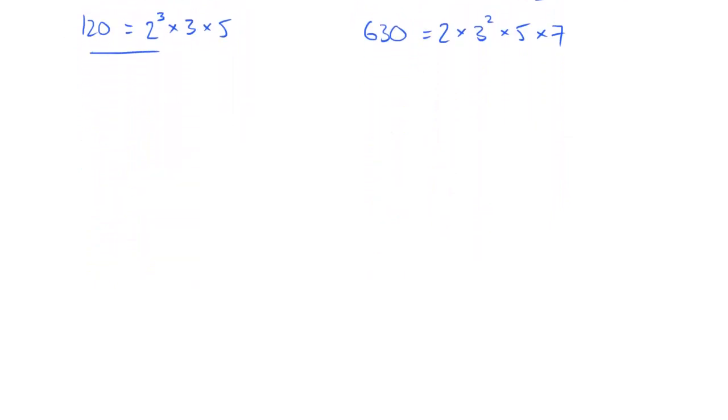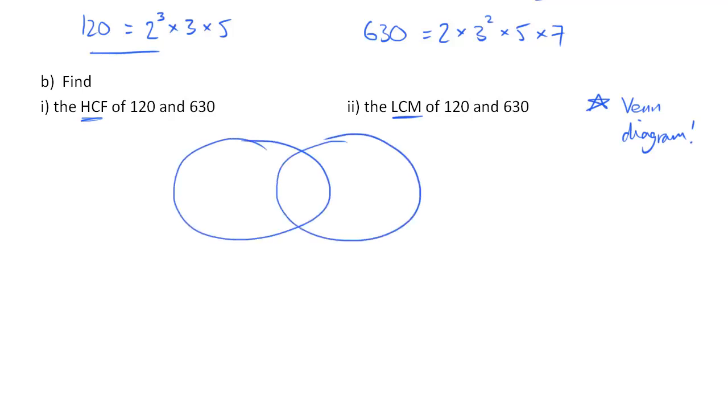Now one way in which this kind of prime factor decomposition is useful is working out things like this. So the highest common factor and the lowest common multiple, given that we've got the prime factor decomposition, the easiest way is to use a Venn diagram. One on the left represents the number 120, and the one on the right represents 630. All the prime factors have to go into this diagram, but ones that they share go in the middle. They both have a 2, so the 2 goes in the middle, but 120 has another 2 twos, so we put 2 squared in the 120 section. They both have a 3, so the 3 goes in the middle, but 630 has another one, so that 3 goes there. They both have a 5, so that goes in the middle. And 630 has a 7, and that goes there.